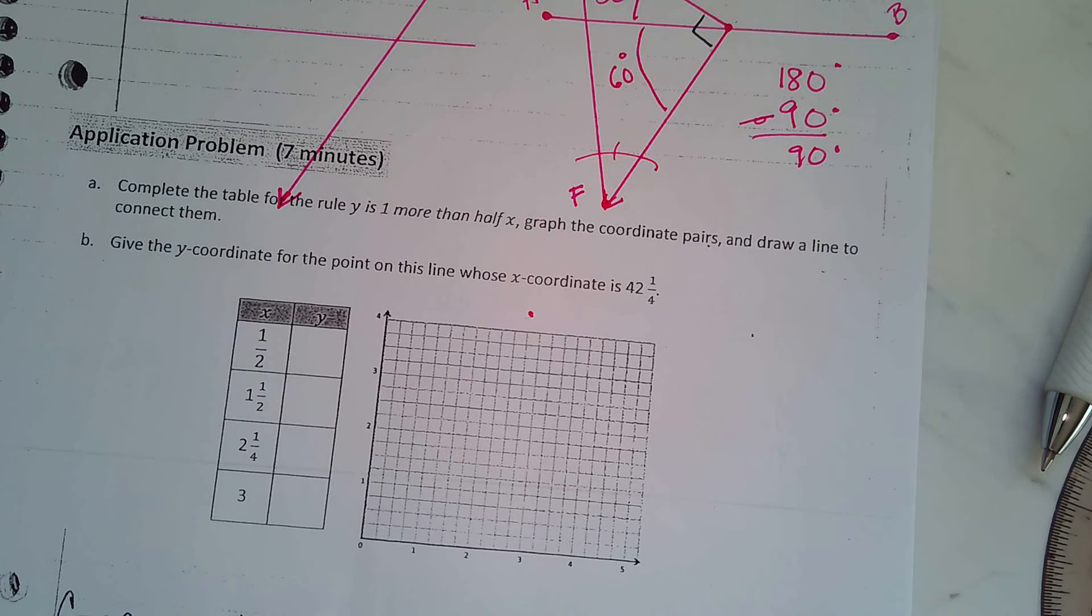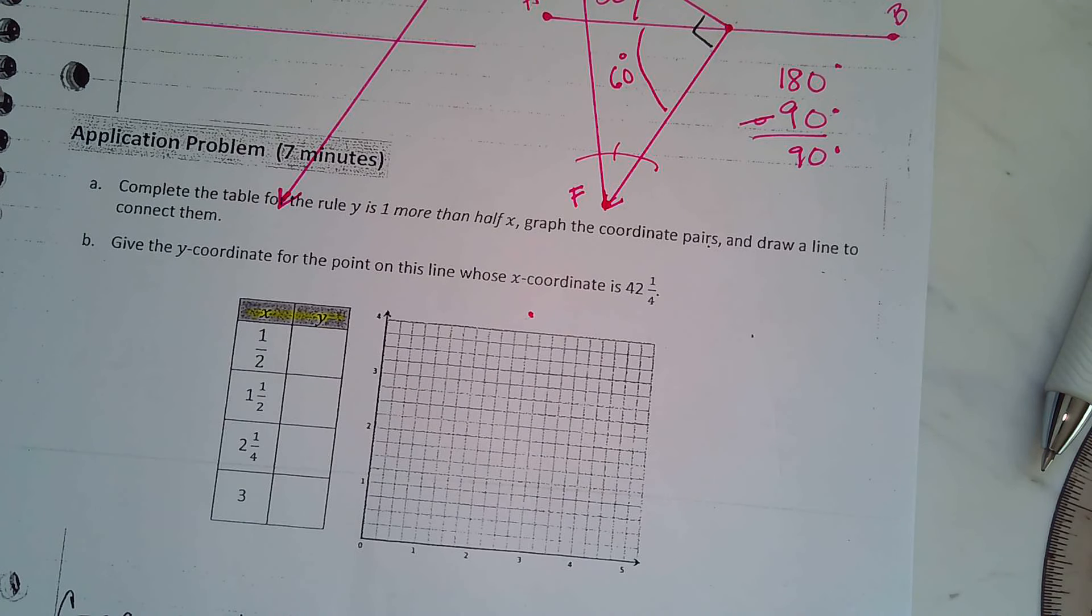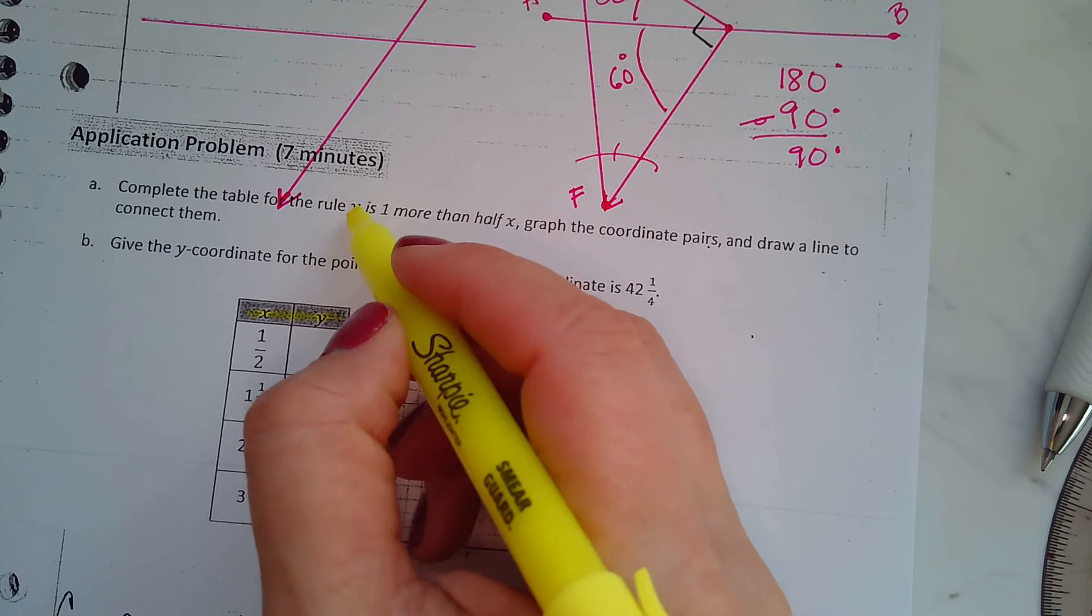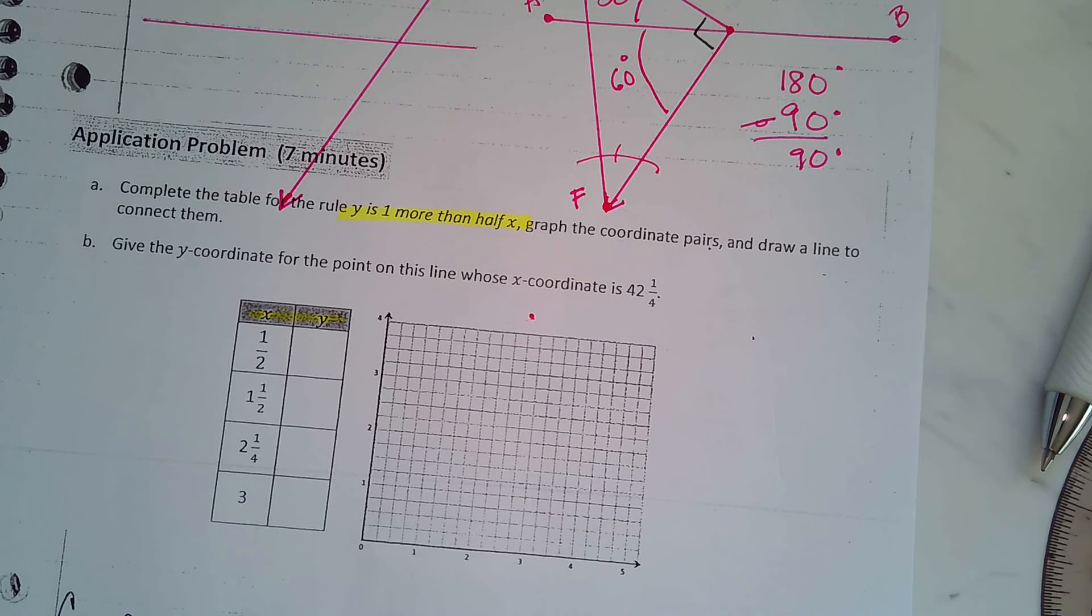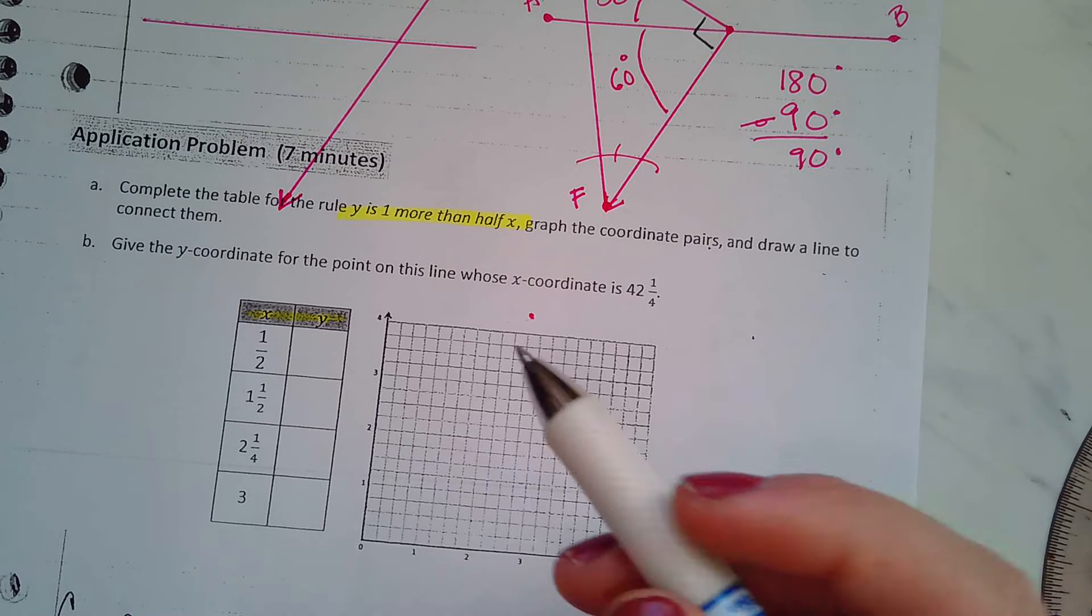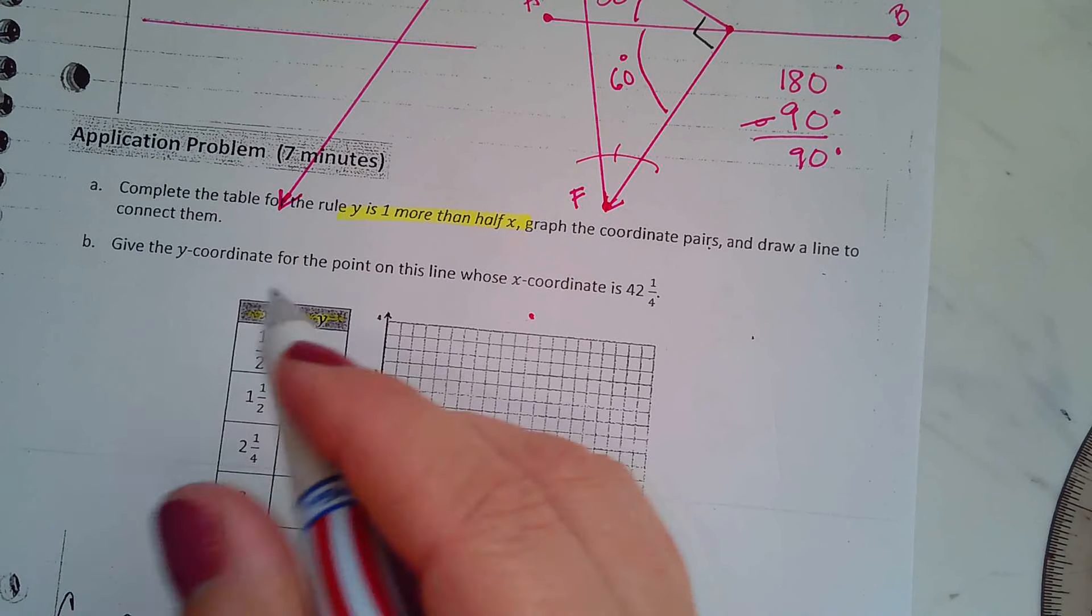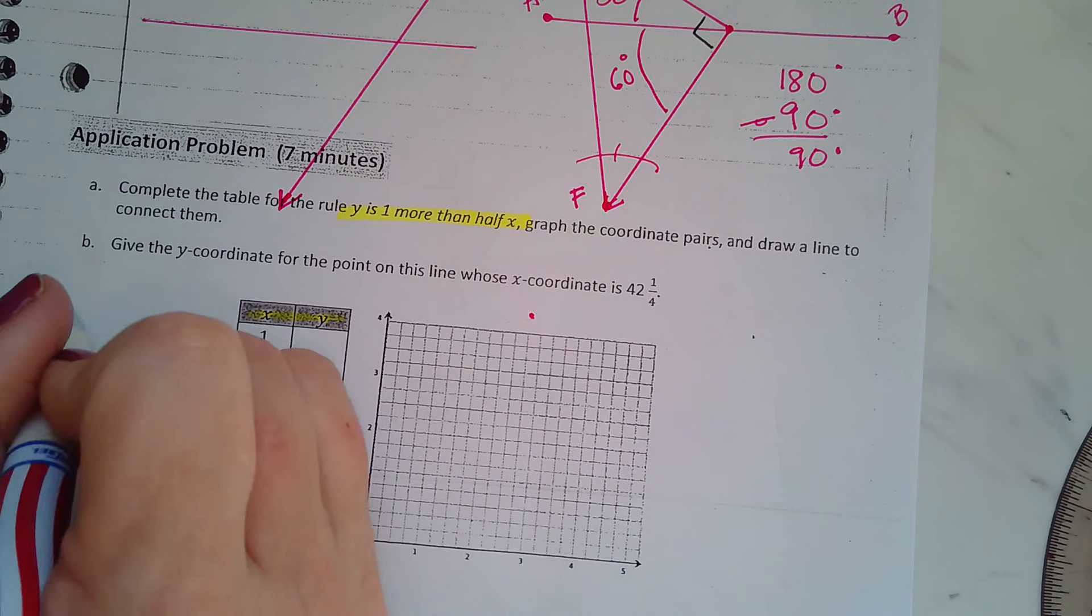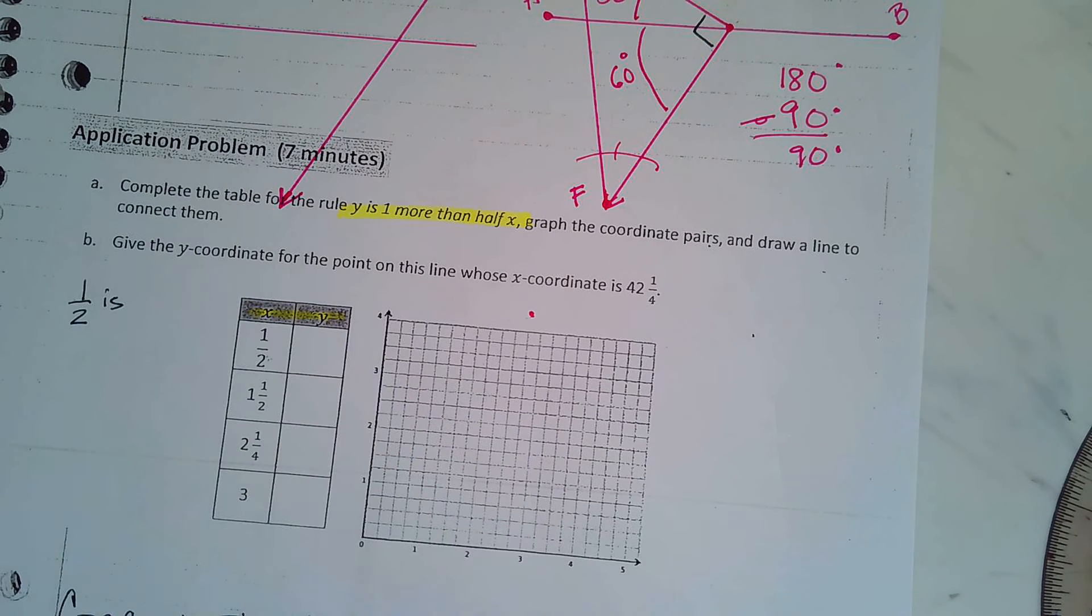Next, we're going to complete the table here. Complete the table for the rule. Y is one more than half X. So Y is going to be one more than half. So one more than half. So how can I find first, how do I find half of a half? What is half of a half? Do you remember this?